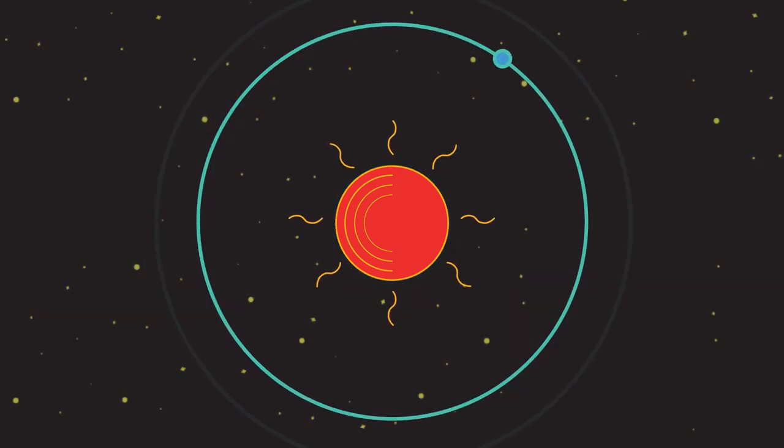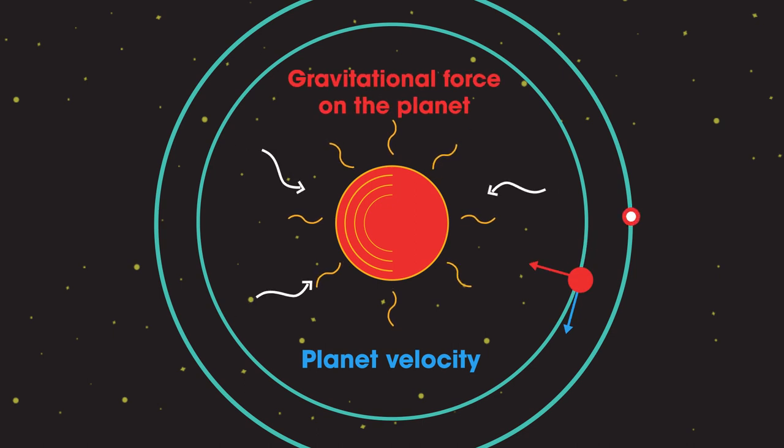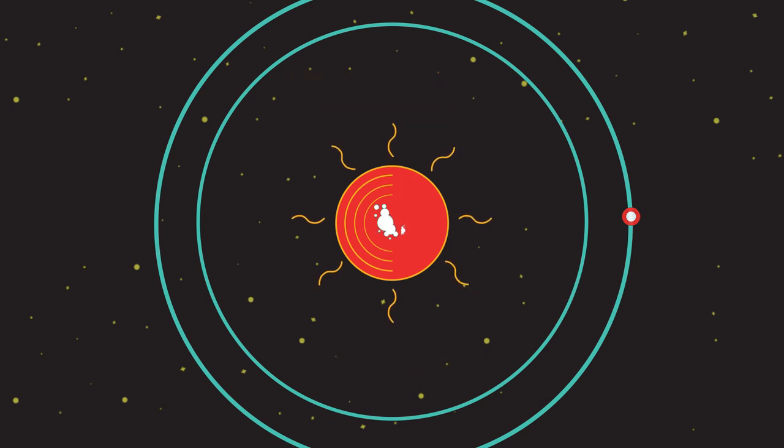The gravitational attraction between two objects is greater the shorter the distance between them. If the force between them is greater, then the object must move at a higher velocity to balance the higher gravitational attraction. Otherwise, the planet will spiral inwards and crash into the sun.